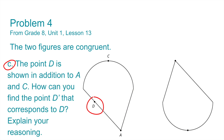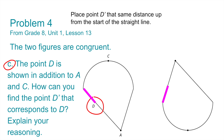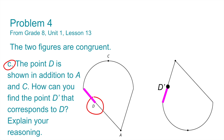Part C: point D is shown in addition to A and C. How can you find point D prime that corresponds to D? Measure the distance from point D up to the end of the straight line, then place point D prime that same distance up from the start of the straight line. Here I've labeled the point for D prime. See you next time.